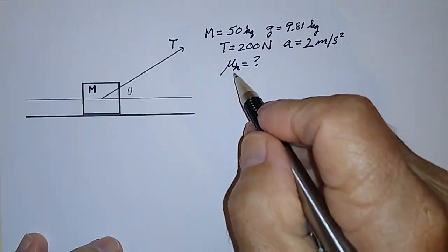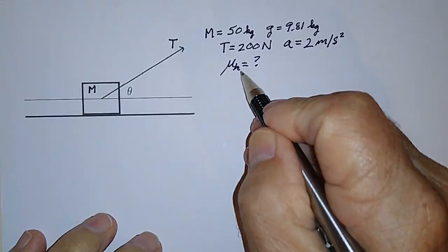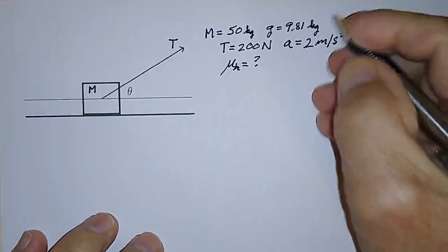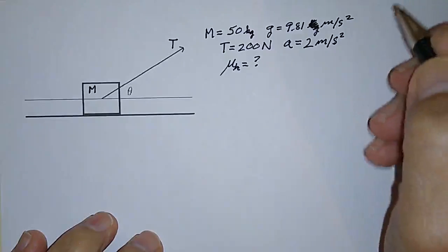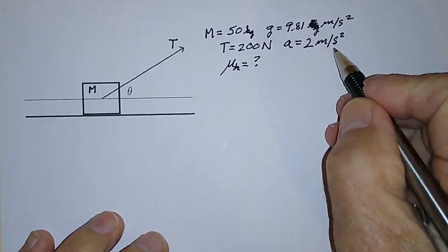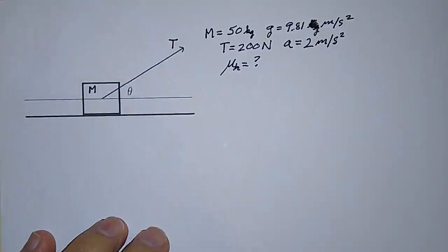The question is what is the coefficient of kinetic friction given that the acceleration due to gravity is 9.81 meters per second squared, the tension is 200 newtons, and the acceleration is two meters per second squared. This is what we want to find.